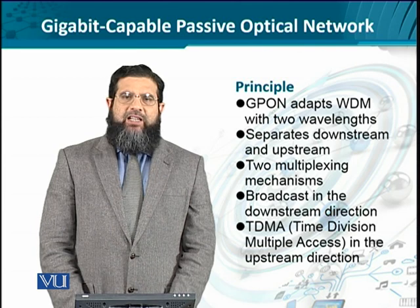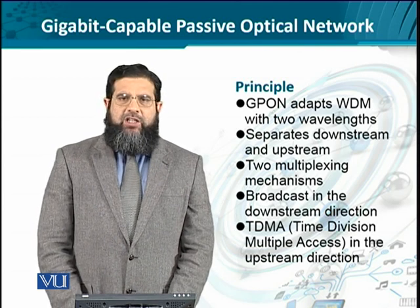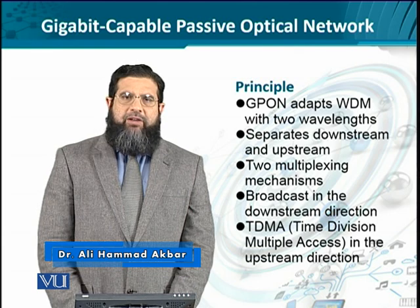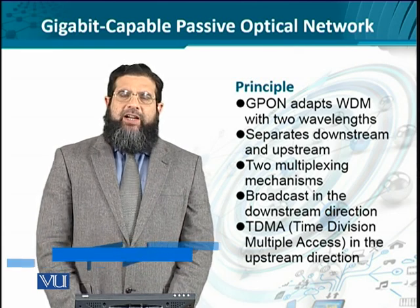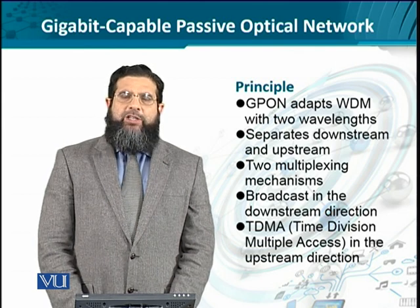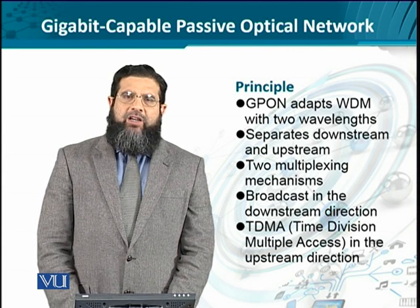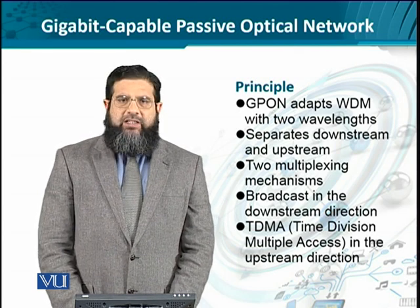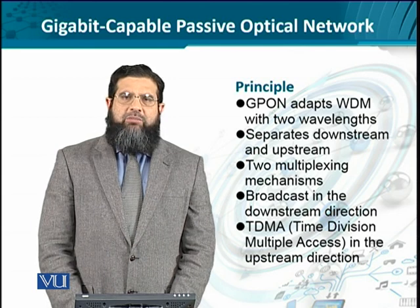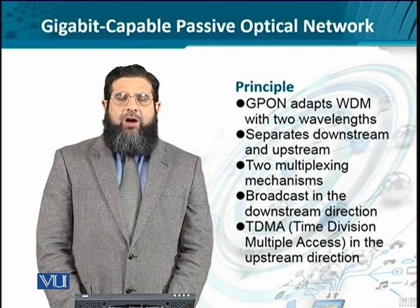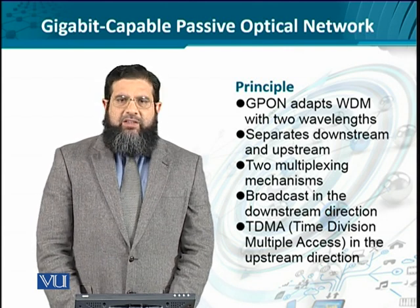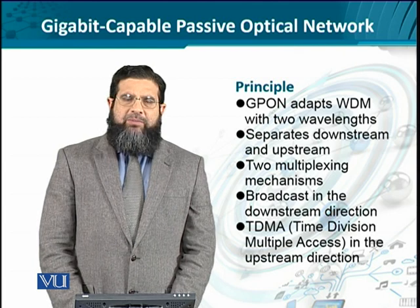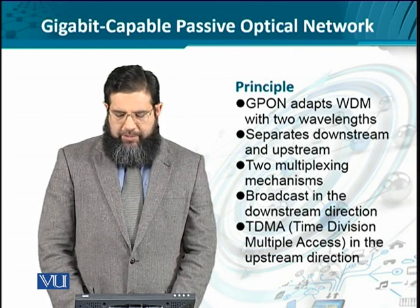When it comes to multiplexing, GPON utilizes either of two mechanisms. Number one, as far as downstream traffic is concerned, the traffic is sent as broadcast — the passive splitter simply replicates the traffic coming from the central office. As far as upstream is concerned, time division multiple access is utilized from the user equipment to the central office. The assignment of these time slots is left to the higher layers or the network manager to adopt a certain type of TDMA mechanism.